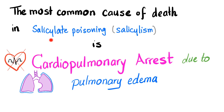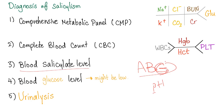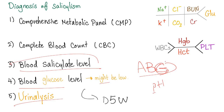There are three phases of salicylate poisoning. The most common cause of death in salicylate poisoning is cardiopulmonary arrest due to pulmonary edema. Diagnosis of salicylism: you need a CBC, CMP, arterial blood gases to measure pH and CO2, blood salicylate level, blood glucose level, and urinalysis. If blood glucose is low, when you give fluid, choose D5W because it contains dextrose.